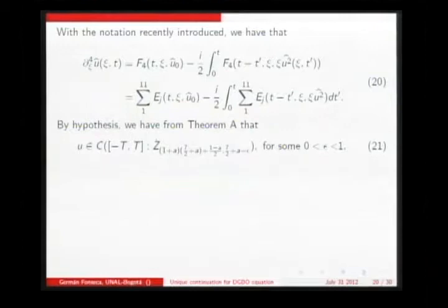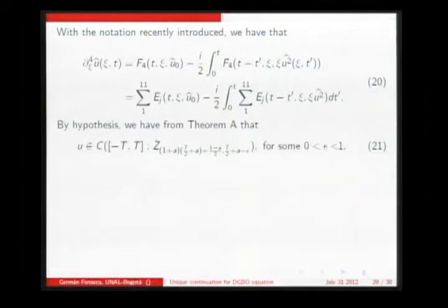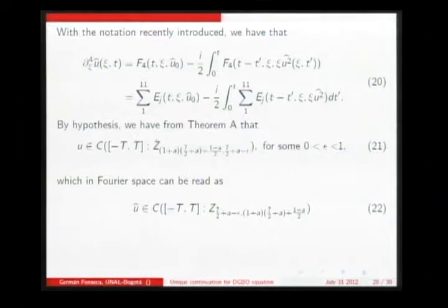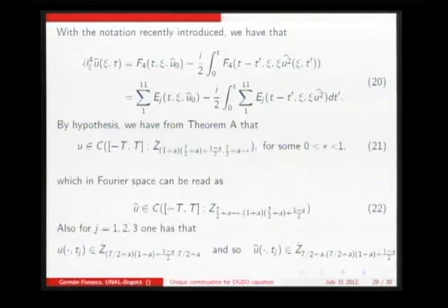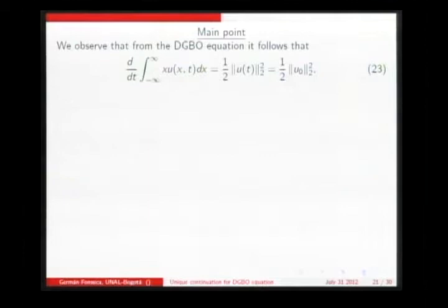We end up with a lengthy expression that includes the hypothesis on the solution — slightly below 7/2 + A in decay, so there is something positive we can plug in. In Fourier transform, the decay becomes regularity. At three times, we get the decay without epsilon — meaning 7/2 + A, which is 4 + alpha. One of the main points is that we have a nice expression for the evolution of the first momentum.